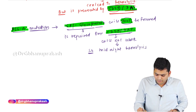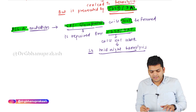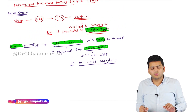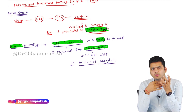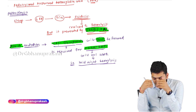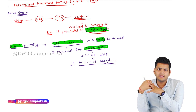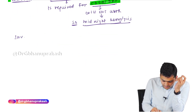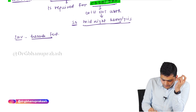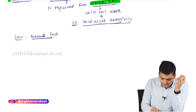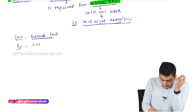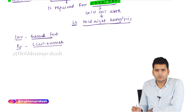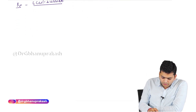The next day morning, when the patient wakes up, they will have hemoglobinuria. This entire condition is called Paroxysmal Nocturnal Hemoglobinuria — the RBCs were not protected from the acidosis-induced hemolysis. The Ham's test can be done to diagnose PNH, and the treatment is eculizumab, a monoclonal antibody.